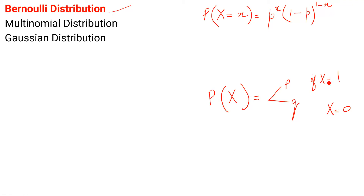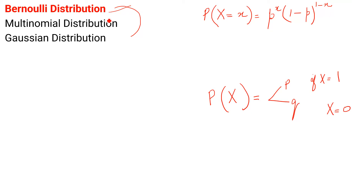When you look at books, you can find equations or formulas which say that P(X = x) equals p raised to the power x, and so on. Please do not be confused and do not think these are very difficult concepts. I will try my best to make it easy. First of all, I will explain where you have to apply Bernoulli distribution and what the implementations are.